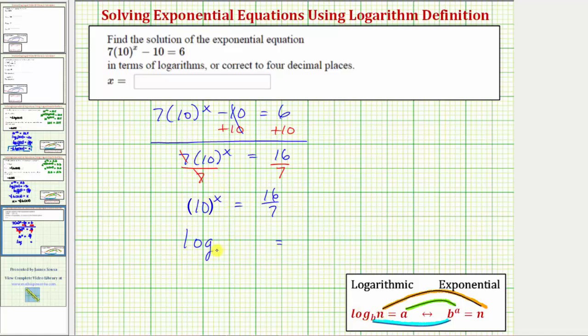We'll notice how the base is 10. Log base 10 is called common log. And so for the next step, we're going to leave the base off because if there is no base given, we know it's common log or log base 10.